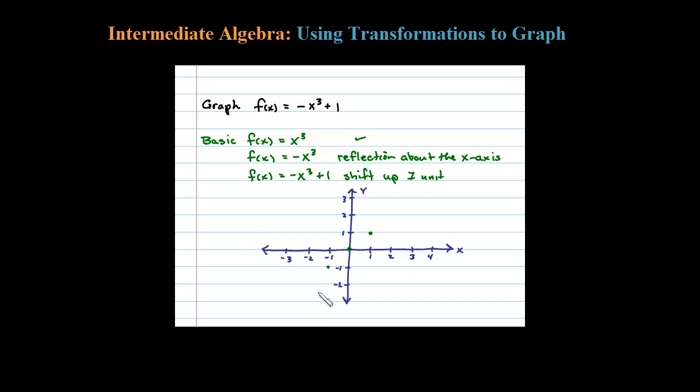So let's go ahead and plot the basic graph. Let's sketch it with a dotted line. That'll look something like this: f(x) = x³.